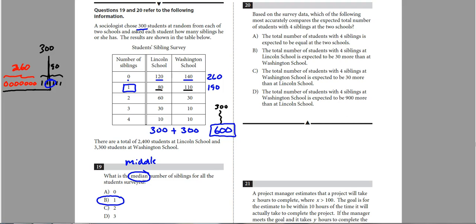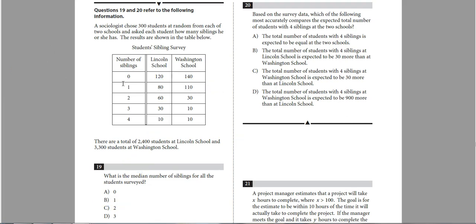It says, based on the survey data, which of the five most accurately compares the expected total number of students with four siblings? All right. So let's kind of go through and let's tackle this. We need to find out the expected total number of students with four siblings. So four siblings is right here. That's represented by 10 from each school, 10 from Lincoln and 10 from Washington. So we get a little piece down here at the bottom. They say there's 2,400 at Lincoln and there's 3,300 at Washington. So that kind is going to come into play here because that's going to change my expected value.